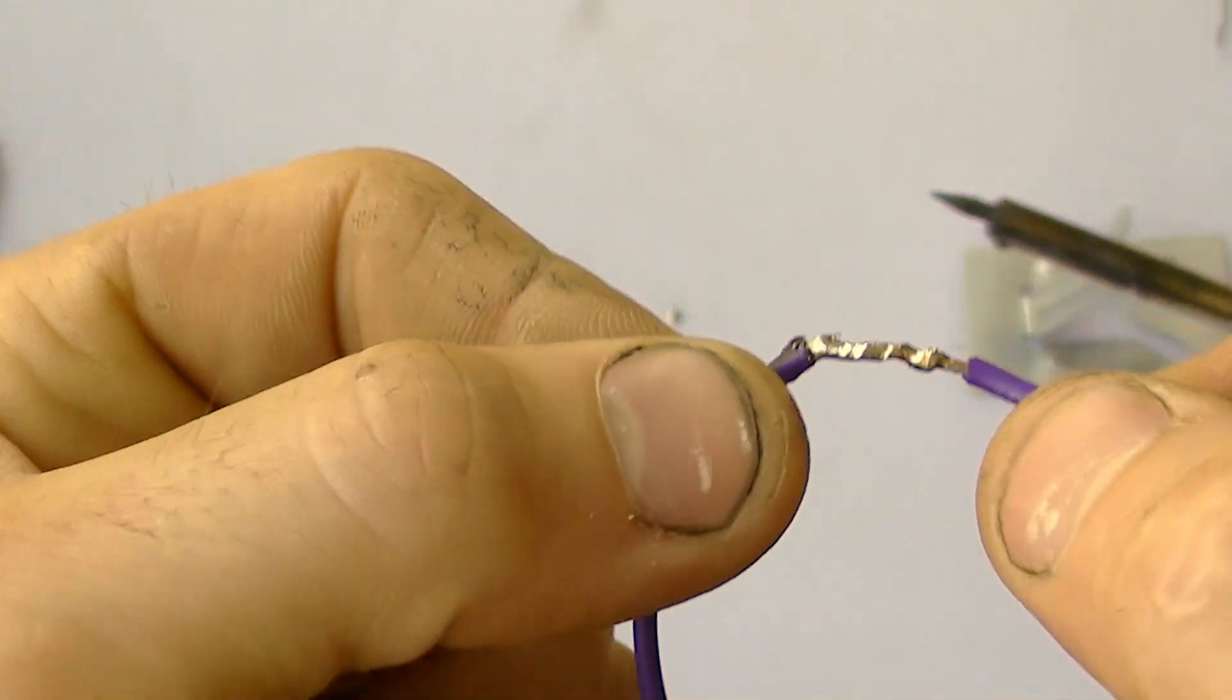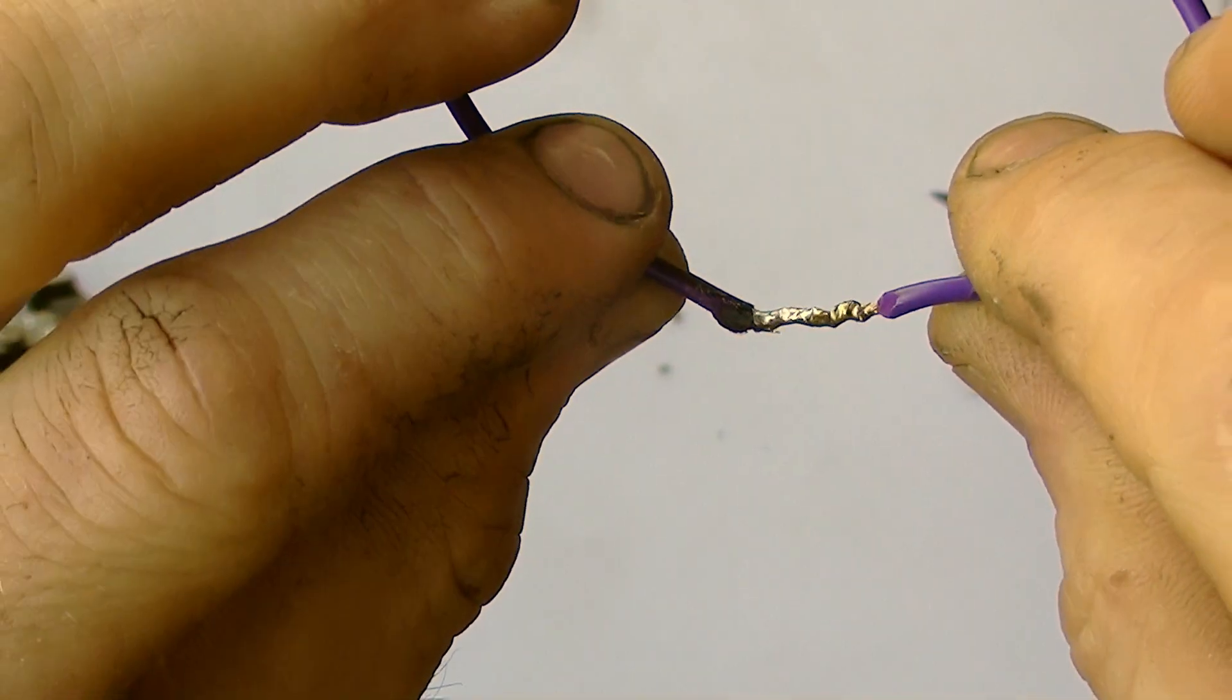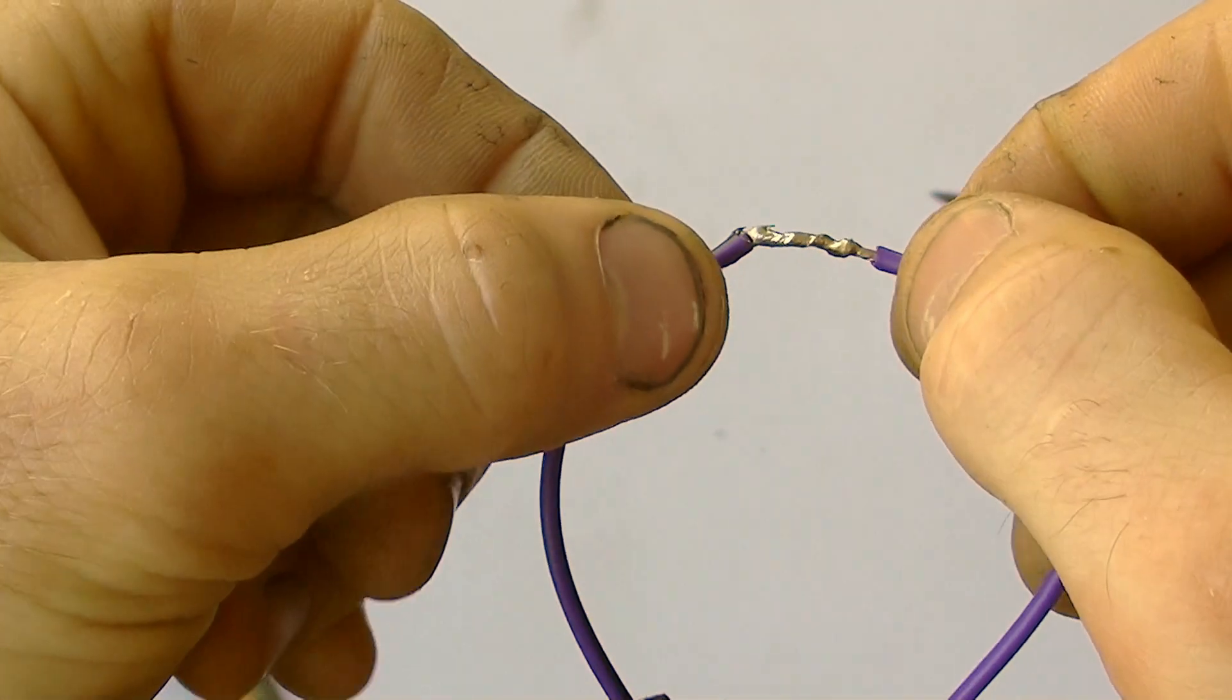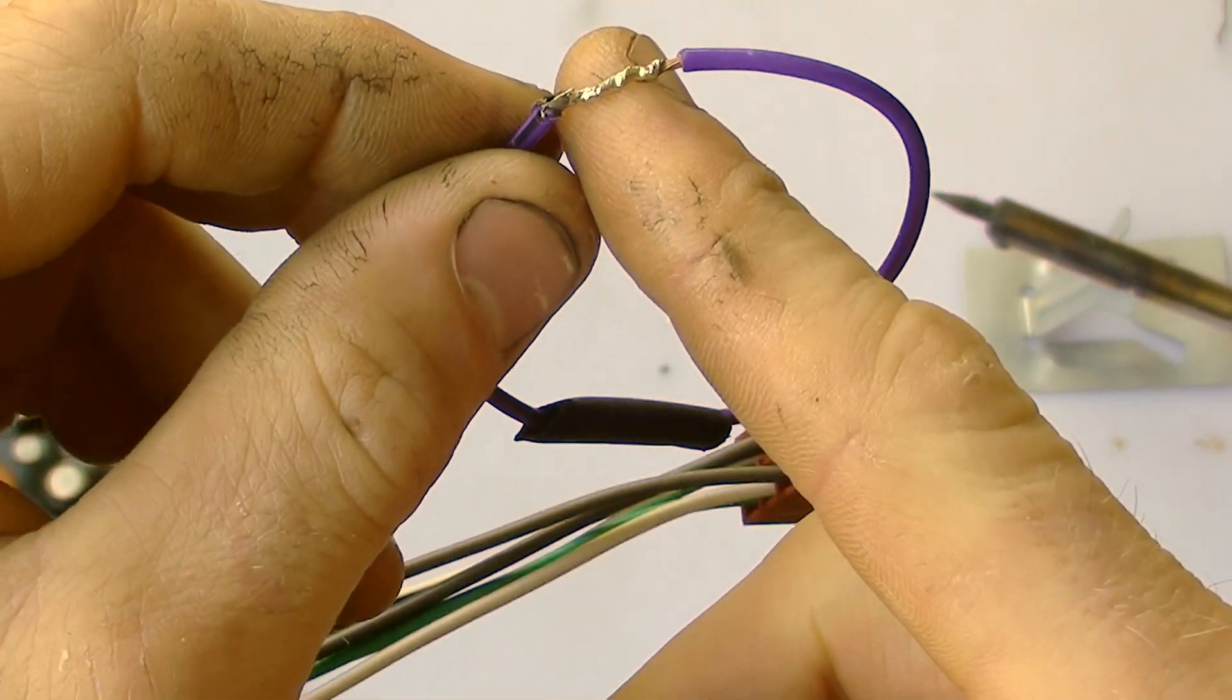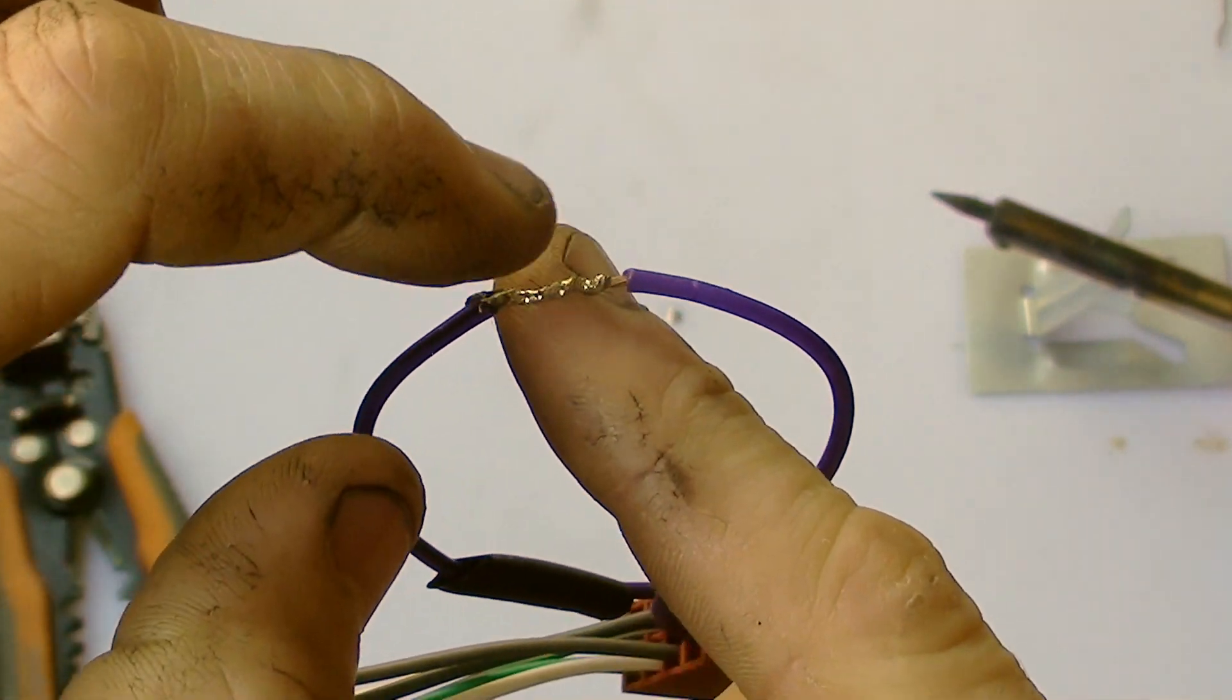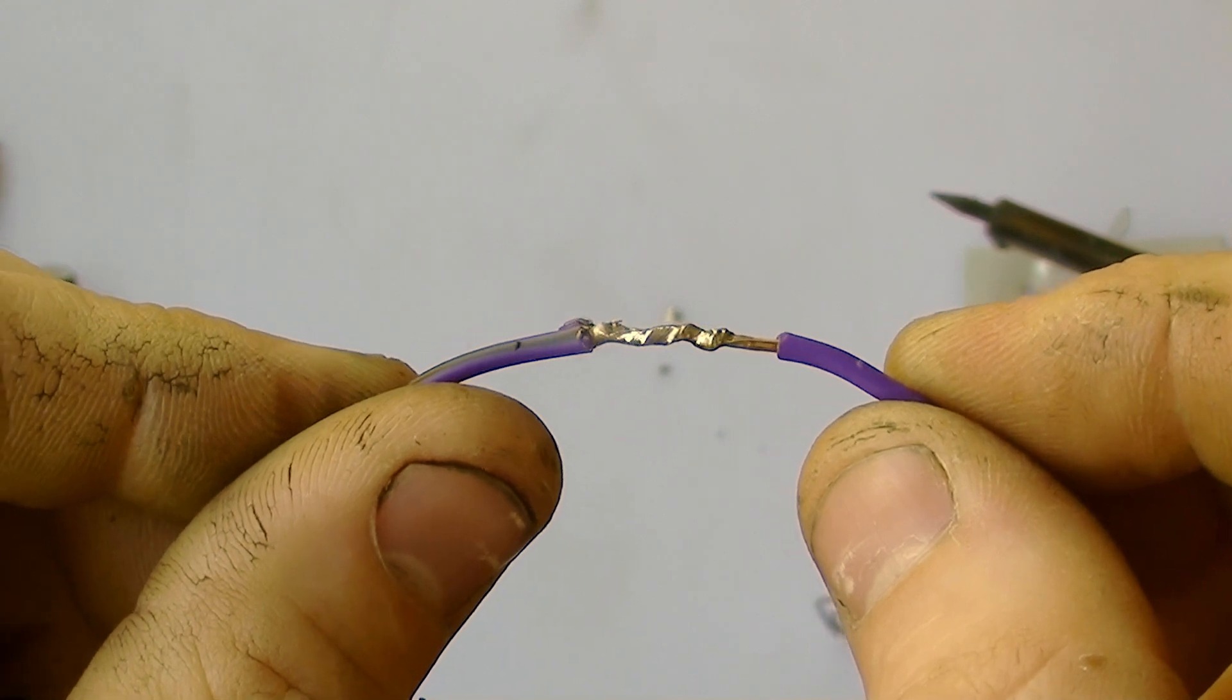But you can see we've got a good amount of solder all over the wiring, all around the wiring, because we allowed the solder to heat the wiring underneath and then the solder to absorb through the top of it. So now we've got a good connection.